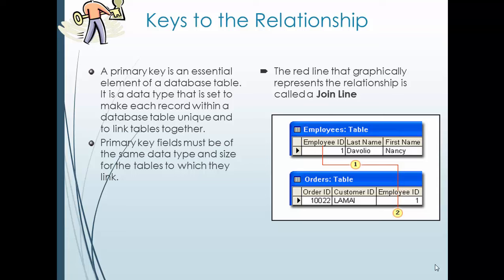The primary key field must be of the same data type and size for the tables they are linked to. For example, employee ID in the employee table has data type varchar and size 50. In the order table, the employee ID should have the same data type — varchar — and the same length — 50. In this diagram, the red line graphically represents the relationship between the two tables.